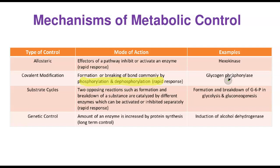Covalent modification involves the formation or breaking of covalent bonds — the most common being phosphorylation and dephosphorylation. It is a rapid response, just like allosteric control. A good example is what happens with glycogen phosphorylase and glycogen synthase. The substrate cycle involves a substance being formed and broken down by two different enzymes — the regulation can involve different modulators that either inhibit or activate. A good example is glucose-6-phosphate formed by hexokinase in glycolysis and broken down by glucose-6-phosphatase in gluconeogenesis.